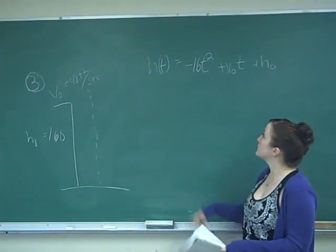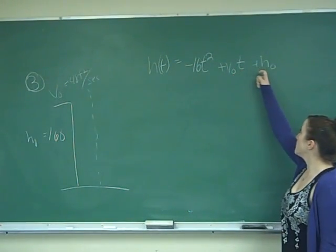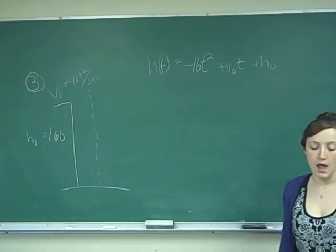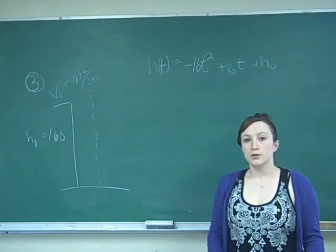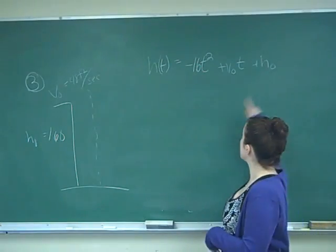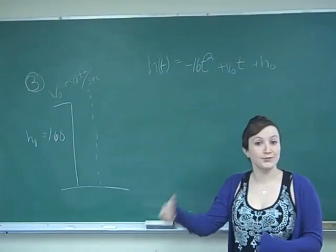Use the formula h of t equals negative 16t squared plus v sub zero t plus h sub zero. And those values, v sub zero and h sub zero, those are your initial velocity and your initial height. And those values are actually given to you in the problem. You just have to recognize that.